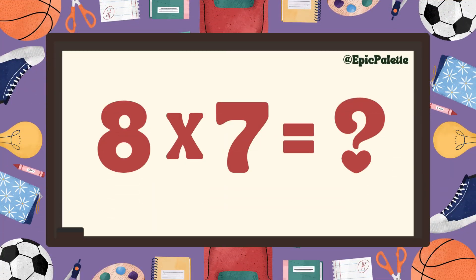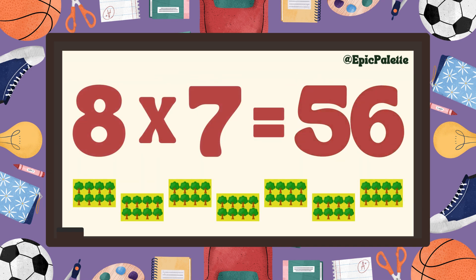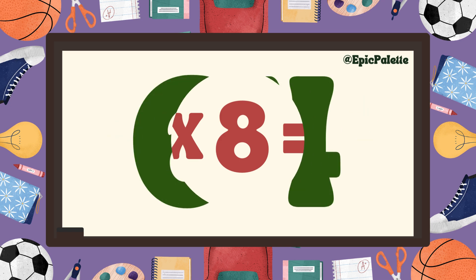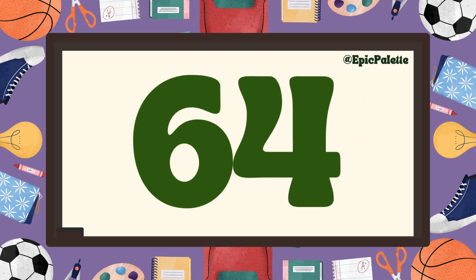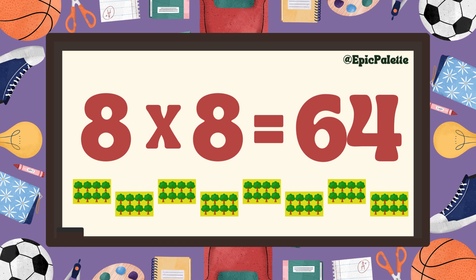Eight times seven equals... Fifty-six. That's right. Eight times seven equals fifty-six. Fantastic, you're doing great. Eight times eight equals... Sixty-four. That's right. Eight times eight equals sixty-four. Perfect.